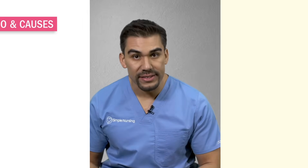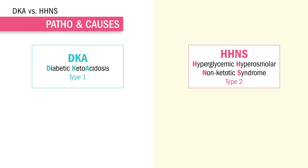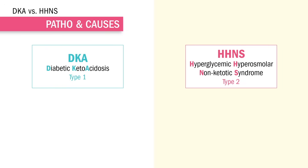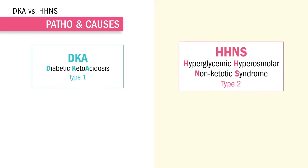So how do you tell the difference between DKA and HHNS? DKA is more common in type 1 diabetes and HHNS for type 2. Think about which letter comes first in the alphabet — D comes first so it's type 1, and H comes second, so that's how you know it's type 2.